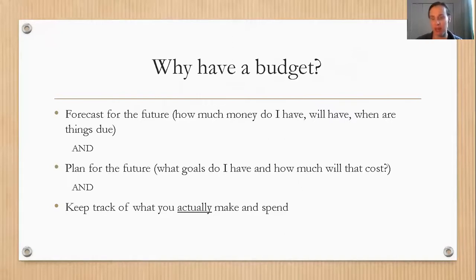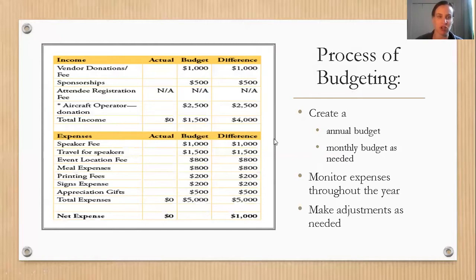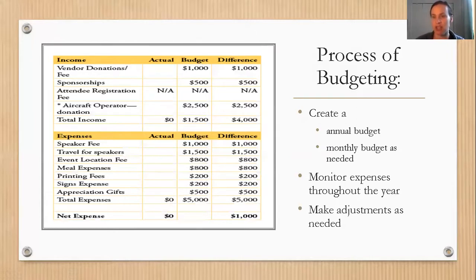It's always a good idea to track what you actually make and what you actually spend. If you have an accounting department, that's what they're doing. If you're a small business owner, you need something like Quicken, an accountant, or a bookkeeper to know how much you're making in tuition versus what you're spending on salary. The budgeting process involves creating an annual budget and a monthly budget to monitor expenses and make adjustments — tracking the actual versus the budgeted amount and the difference.